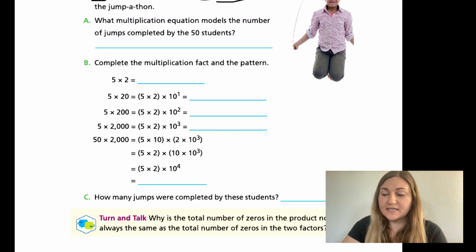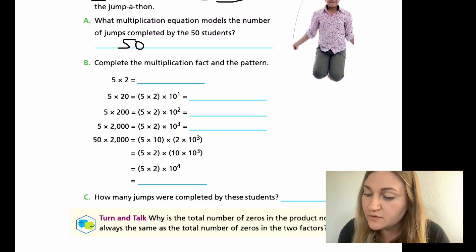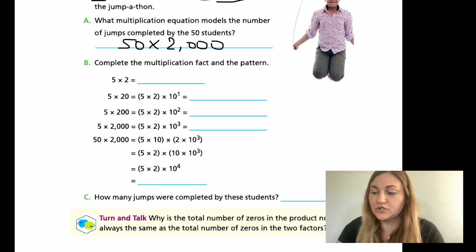Hopefully you were successful going through A, B, and C. I'm going to go over those now at a quicker pace. What multiplication equation models the number of jumps? I'm going to do my 50 students times their 2,000 jumps each.